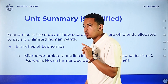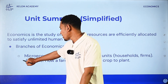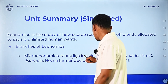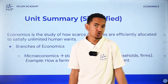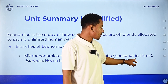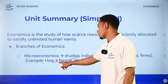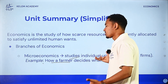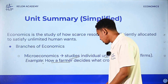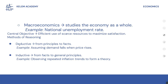Economics is a broad discipline with two main branches. Microeconomics focuses on individual units such as households, firms, markets, and industries. For example, microeconomics examines how farmers decide what crops to produce.